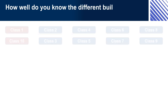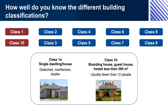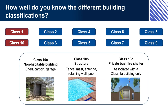Class 1A: single dwelling — house, detached, row, terrace, duplex. Class 1B: boarding house, guest house, hostel less than 300 square metres, usually fewer than 12 people. Class 10A: non-habitable building — shed, carport, garage. Class 10B: structure — fence, mast, antenna, retaining wall, pool. Class 10C: private bushfire shelter, associated with a Class 1A building only.